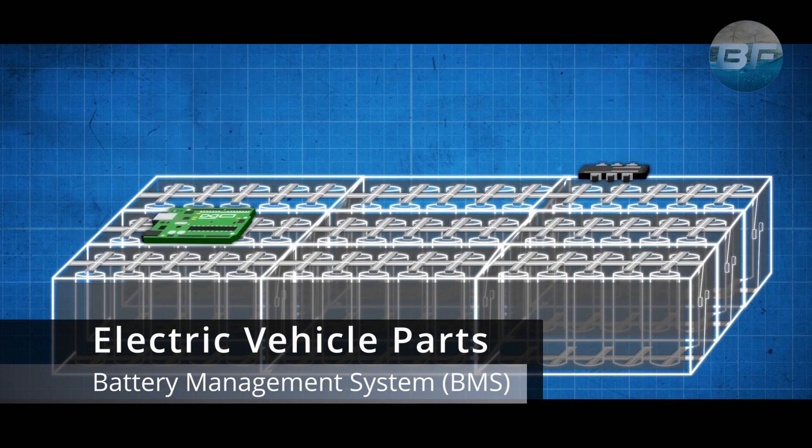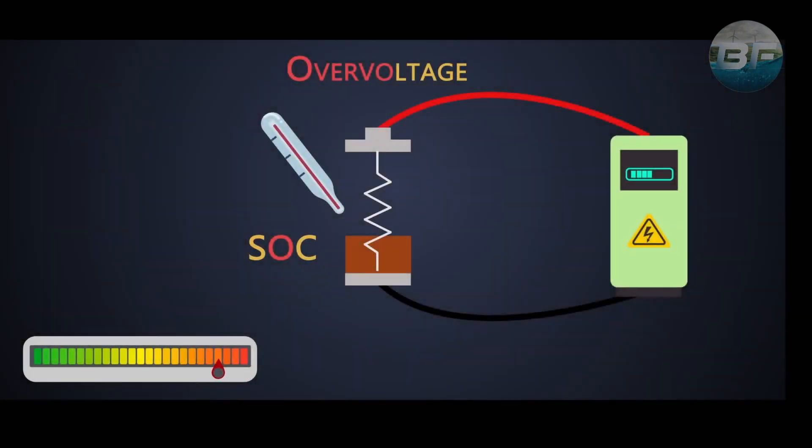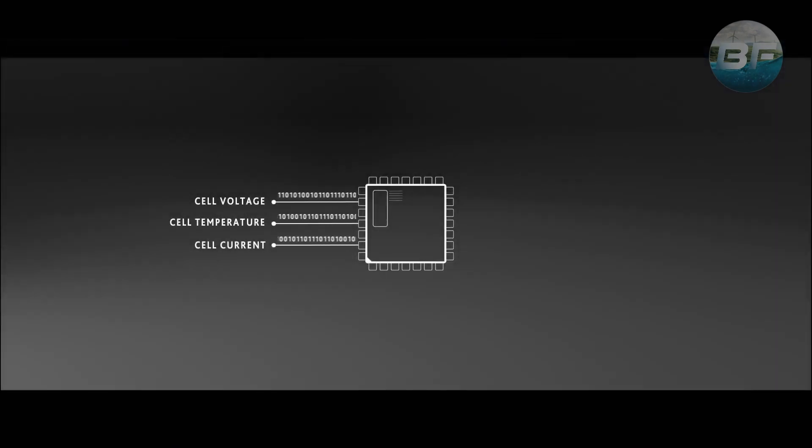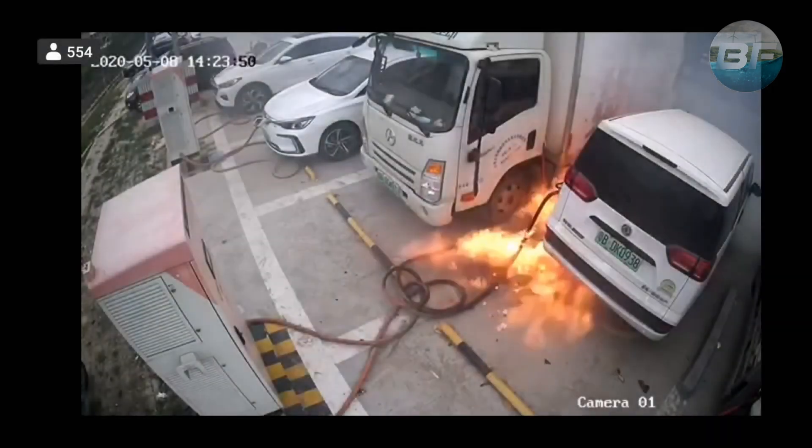Furthermore, the battery is equipped with a battery management system that monitors and controls the battery's temperature, voltage, and current. The BMS helps to ensure that the battery operates safely and efficiently by preventing overcharging or over-discharging of individual cells, which could lead to cell damage or even a fire.